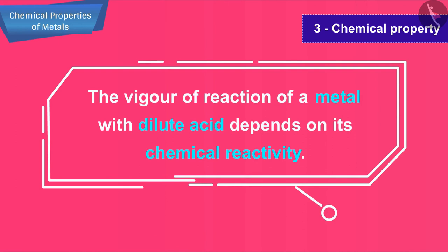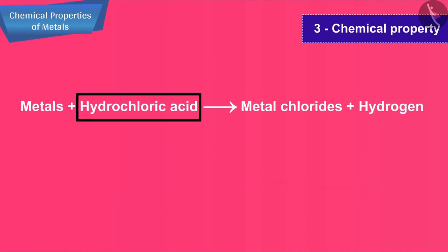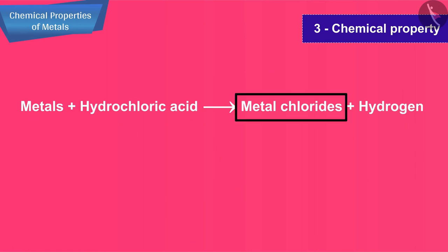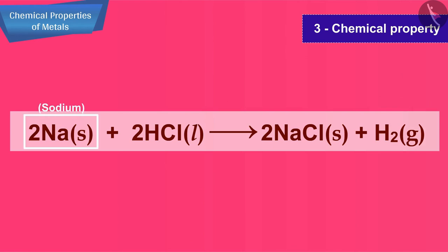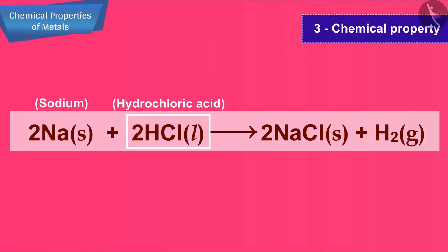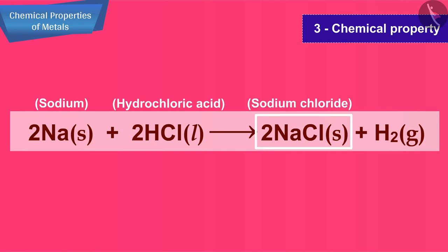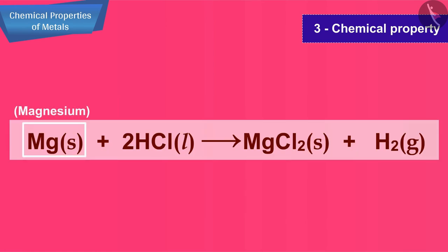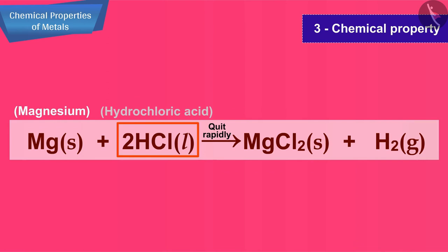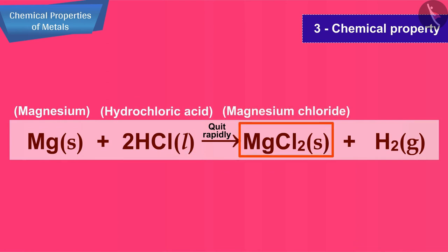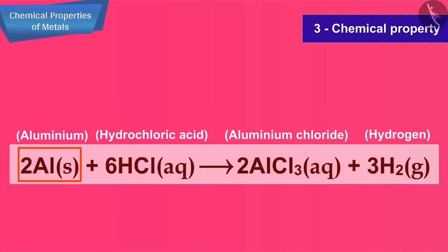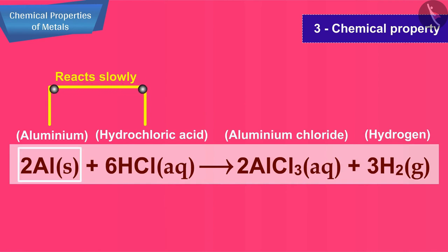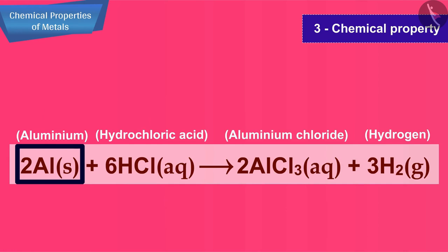When a metal reacts with a dilute acid, a metal salt and hydrogen gas are formed. The vigor of reaction depends on the metal's chemical reactivity. Metals react with dilute hydrochloric acid to give metal chlorides and hydrogen gas. Sodium metal reacts violently with dilute hydrochloric acid to form sodium chloride and hydrogen gas. Magnesium also reacts quite rapidly with dilute hydrochloric acid, forming magnesium chloride and hydrogen gas.